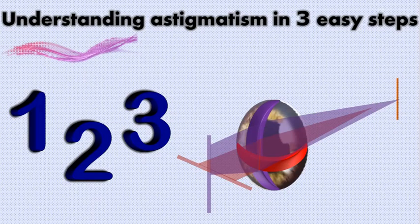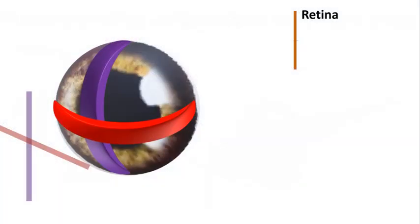Many are intimidated by the concept of astigmatism. However, it is easy to understand with the help of a couple of diagrams and three easy steps. Astigmatism can be of either corneal or lenticular origin. As corneal astigmatism is much more common, today we will try to understand astigmatism with the help of corneal astigmatism as an example.